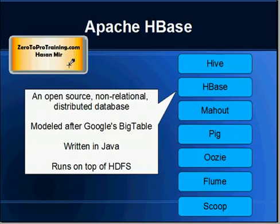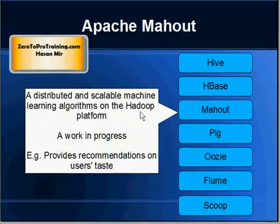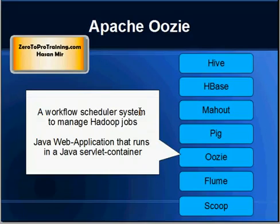Mahout is an interesting project. It is a distributed and scalable machine learning algorithm library on the Hadoop platform. It is actually a work in progress and it is progressing very fast. An example of Mahout output would be that it provides recommendations based on users' tastes — based on the data you have provided to the system, it will scan the data and provide recommendations like what a person would be more interested in.